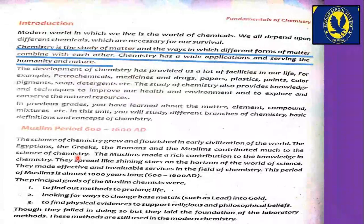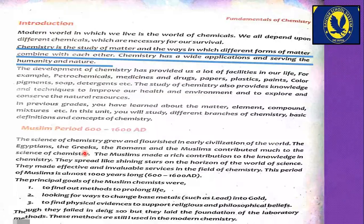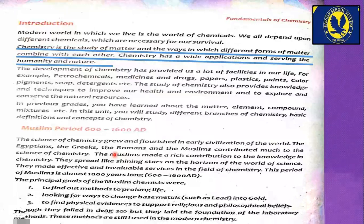The Egyptians considered their own king as god, while the Greeks worshipped various deities. The Romans were followers of Christianity; they followed the teachings of Hazrat Isa (AS). Later, distortions crept into Christian theology. The fourth civilization is the Muslims, who believed in one God, which you all know well.